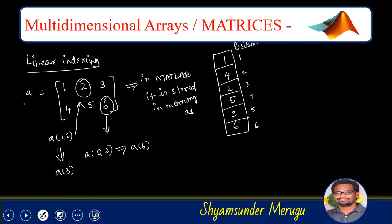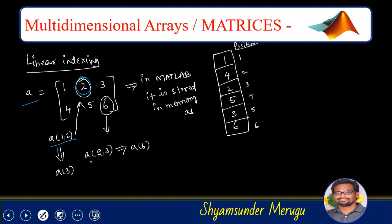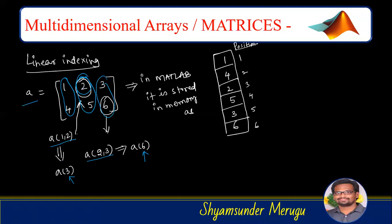Coming to linear indexing — if you have a matrix A with 2 rows and 3 columns, you can access an element using A(1,2), where 1 indicates the first row and 2 indicates the second column, to access the value 2. To access element 6 at second row and third column, write A(2,3). When a matrix is entered into MATLAB, it stores elements column-wise — first 1 and 4, then 2 and 5, then 3 and 6.